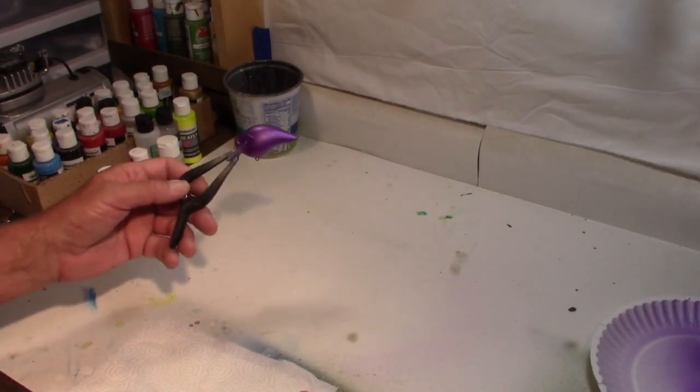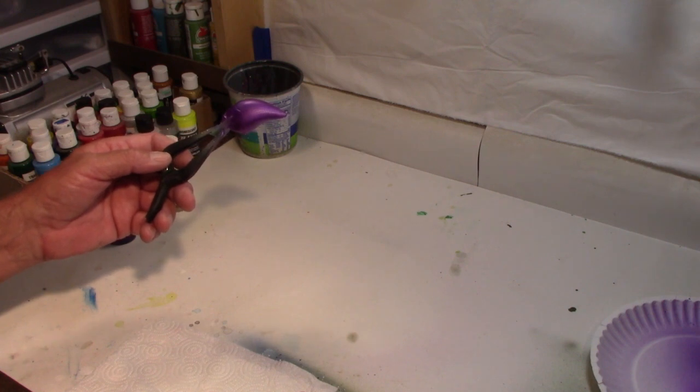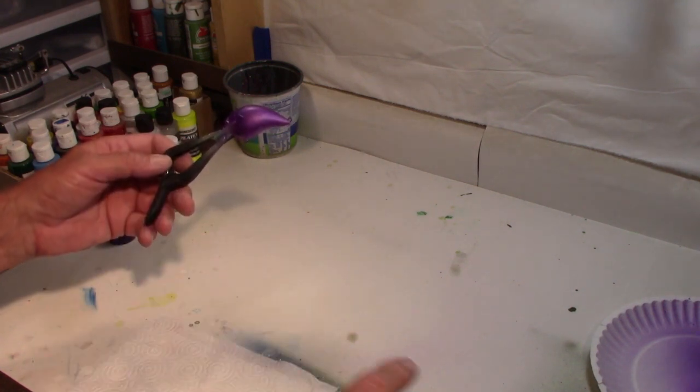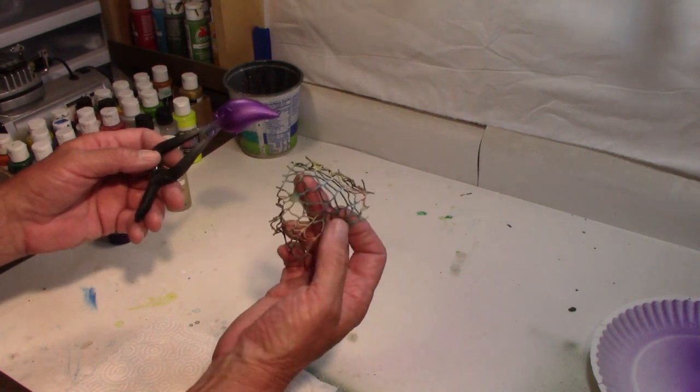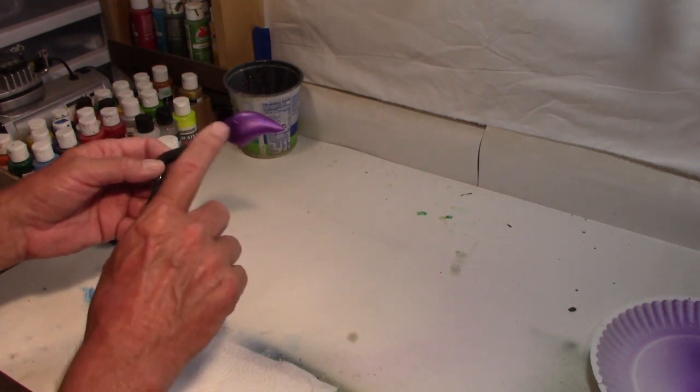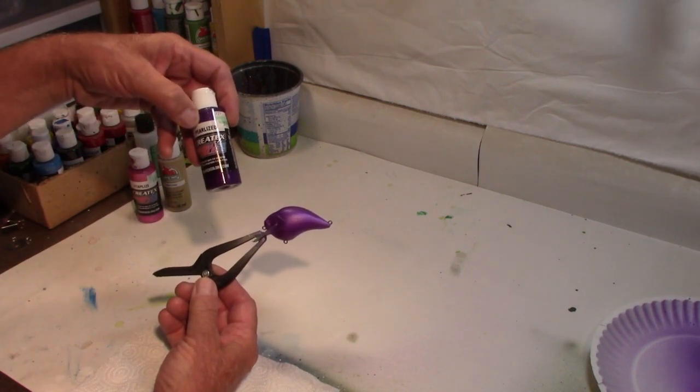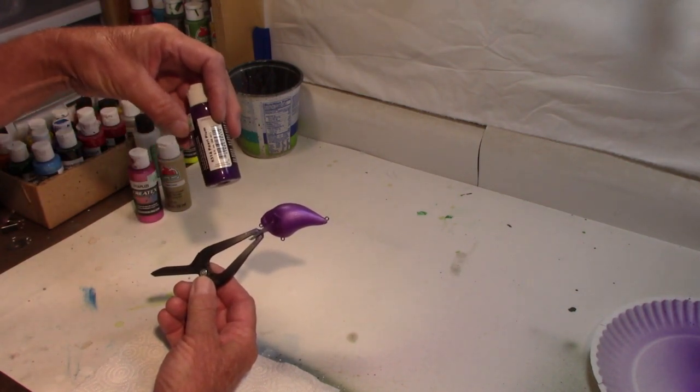So what are we going to paint today? Well, we're going to paint an S-crank in a PB&J pattern. Now, I'm going to wrap this lure with the wrap we've used before. So for my base coat, I decided to use a Createx Pearlized Plum.